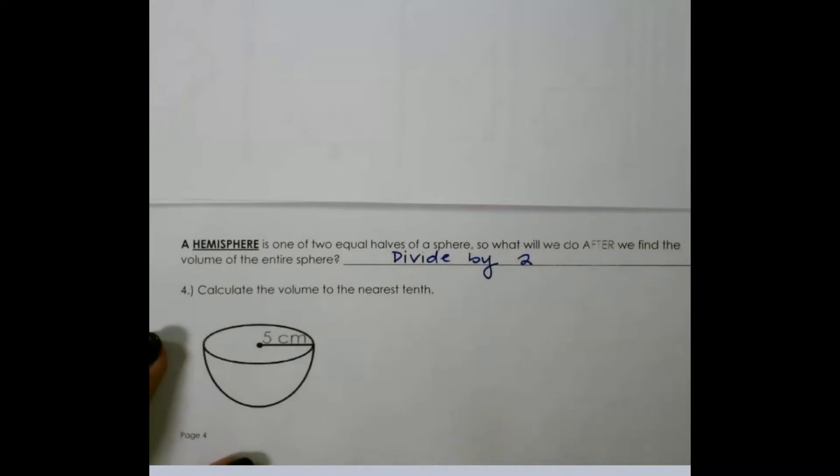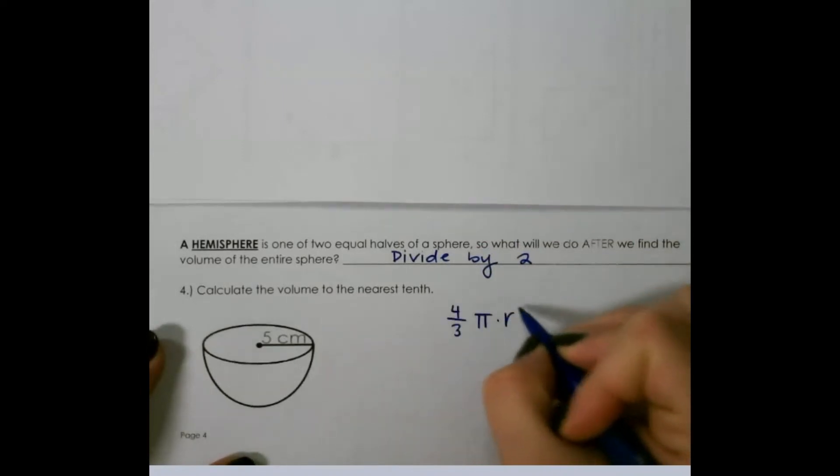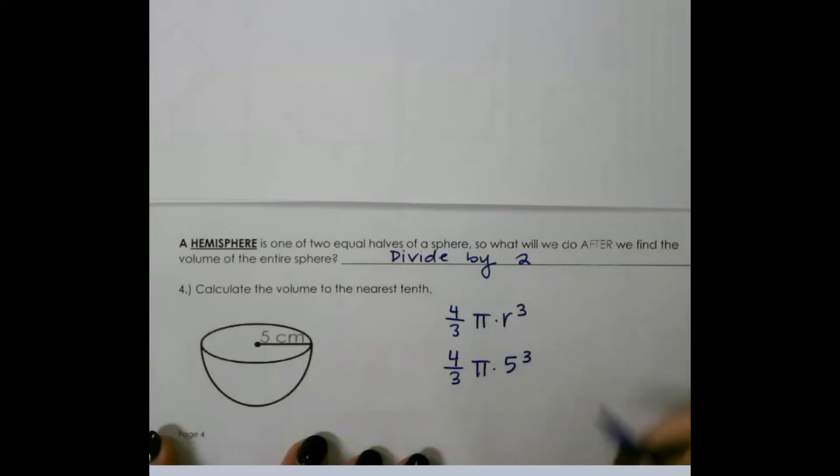So remember, our formula for volume of a sphere is four-thirds pi r cubed. So to solve this, we would do four-thirds pi times five cubed, and then divide by two at the very end.